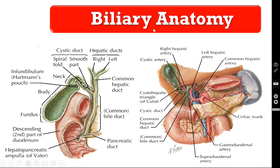Coming to the applied anatomy or biliary anatomy — here you are seeing the right hepatic duct, formed by the fusion of all intrahepatic biliary radicals of the right side of the liver. The left hepatic duct forms by the fusion of intrahepatic biliary radicals from the left side. Both the right and left hepatic ducts join together to form the common hepatic duct.